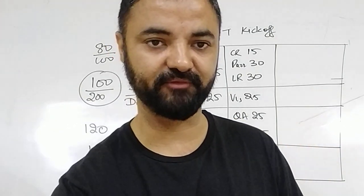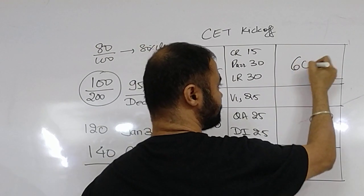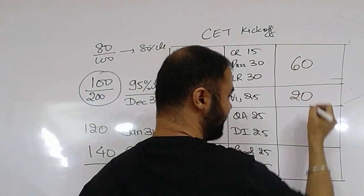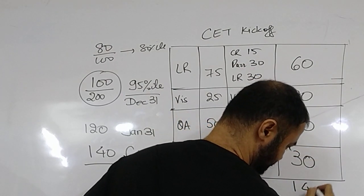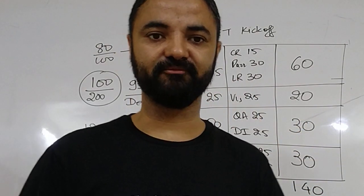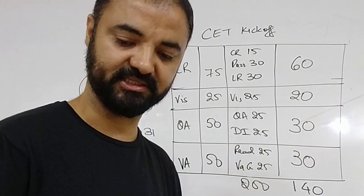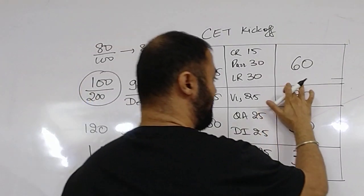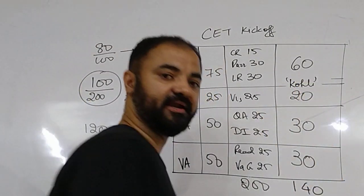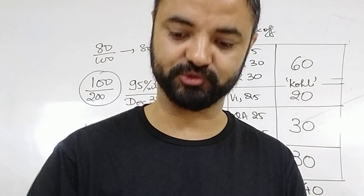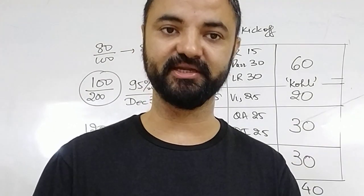So this is the first thing to be done. On the exam day, your target score is 60 in Logic, 20 in Visual, 30 in Quant, 30 in Verbal — this is your 140-mark breakdown for JBIMS: 60, 20, 30, 30. Logic is your Kohli — Virat Kohli. Your Kohli has to score in the CET paper. You have to make sure that Kohli does score.